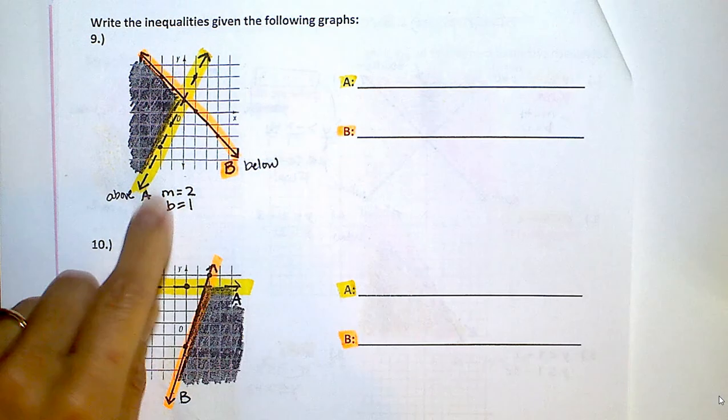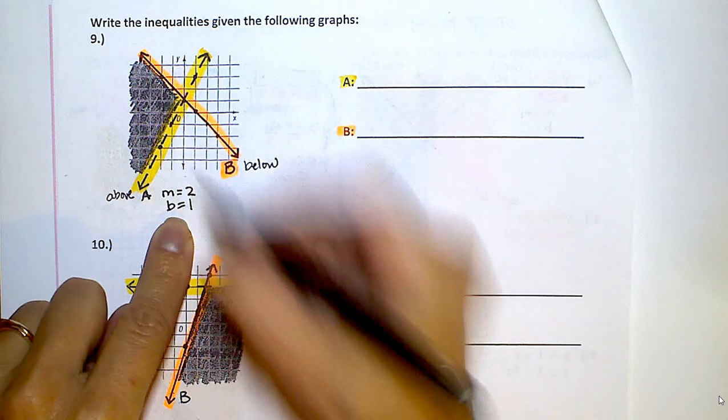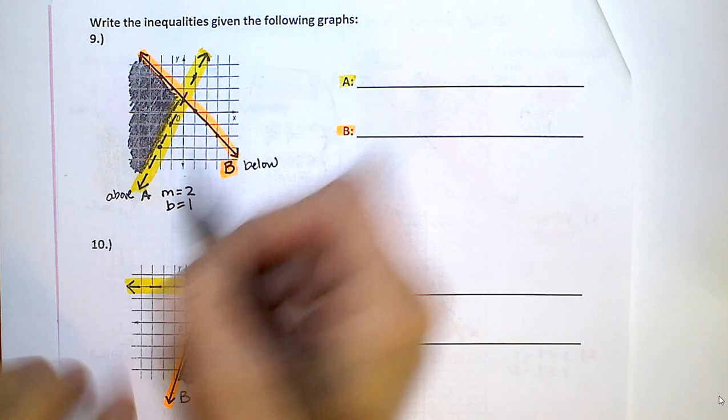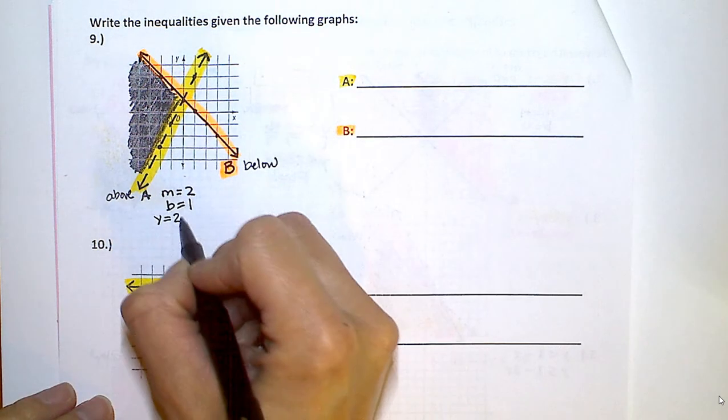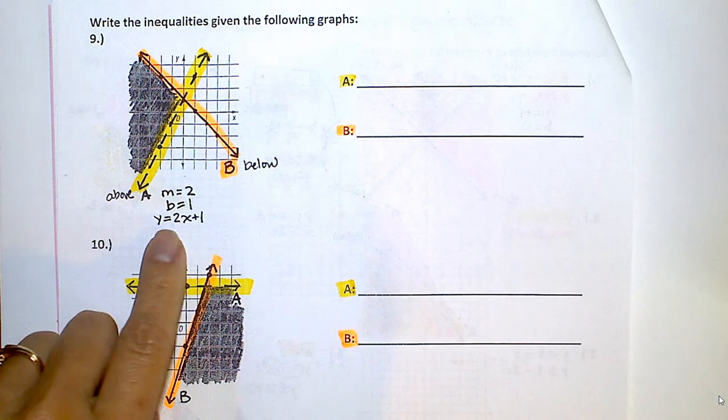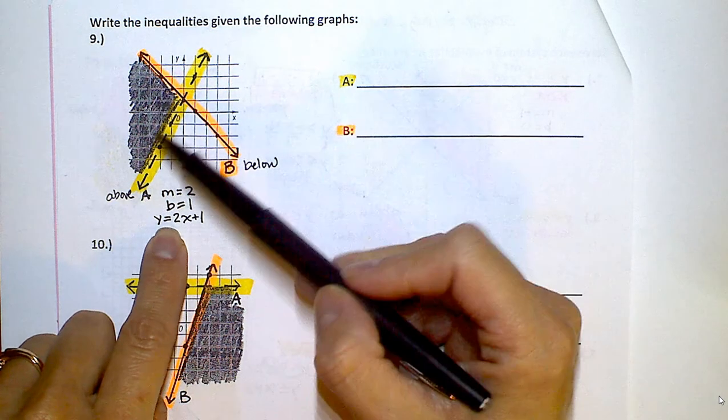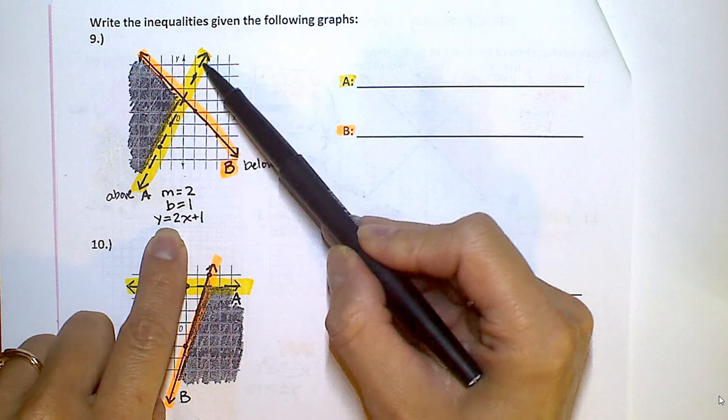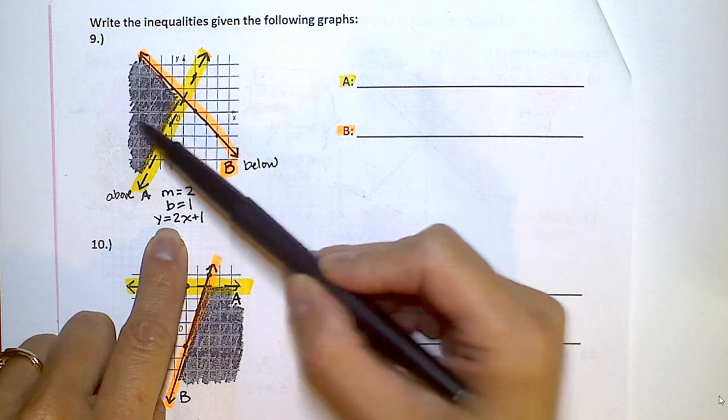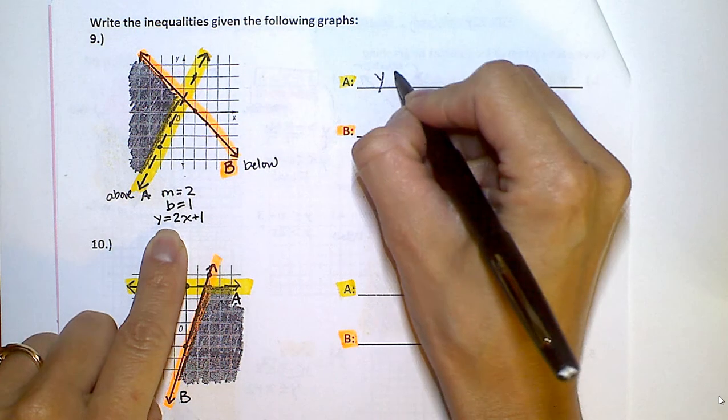So if I was writing an equation, just an equation for A, it would be y equals 2x plus 1. But we don't want to use an equation. We're going to use greater than or less than because this is a dashed line and we're shading above. Since we're shading above, I'm going to put y is greater than.